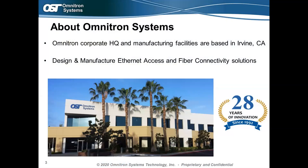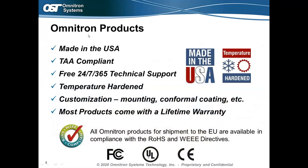Here's our corporate headquarters in Irvine, California. Omnitron is a manufacturing and engineering company — we design, engineer, and manufacture all of our own products in-house. We're celebrating 28 years in business since 1992. All products are made in the USA, are TAA compliant, and Omnitron offers free 24/7 tech support with no contracts. Products can be commercial or temperature-hardened for harsh industrial environments, with customization options and lifetime warranty.